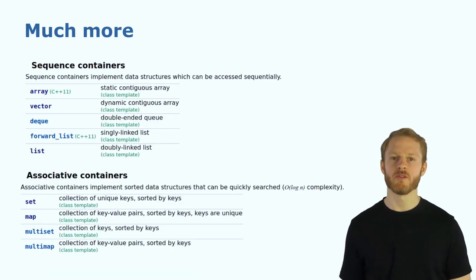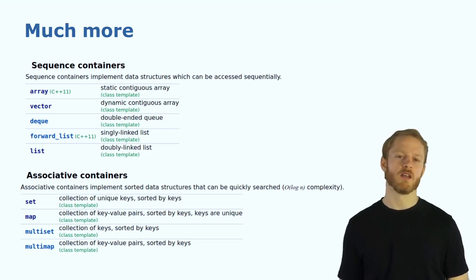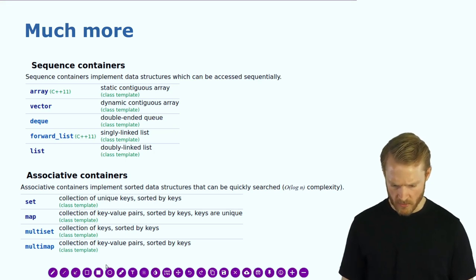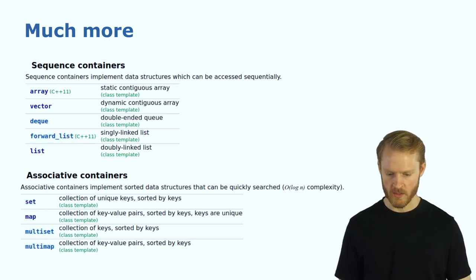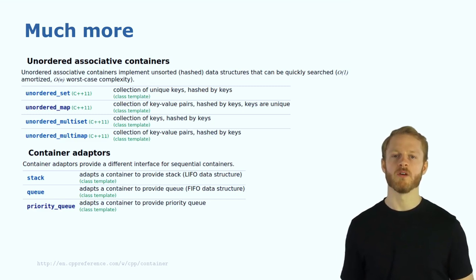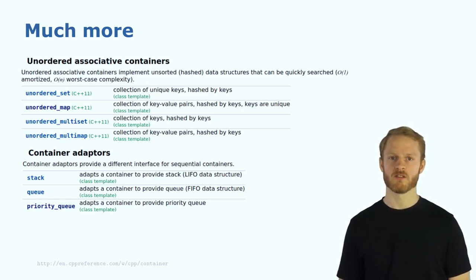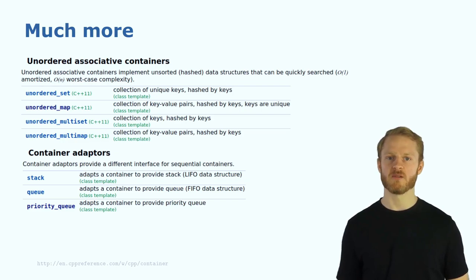You can check more about these containers and their functionalities on cppreference.com. There are also sets, multi-sets, multi-maps, forward lists, stack, queue, and priority queue. Whenever you need to work with these types of data, don't create your own type — use the containers that come in the standard template library.